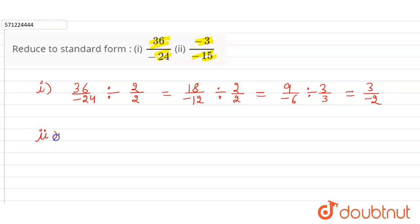Now second part is minus 3 and minus 15, right? Minus 3 and minus 15 we can divide this by minus 3. So minus 3 divided by minus 3 is 1 and minus 15 divided by minus 3 is 5, right? So this is the standard form: 3 by minus 2 and 1 by 5.